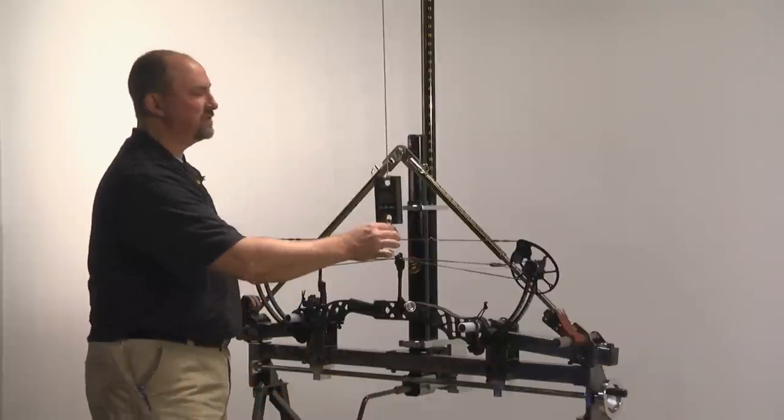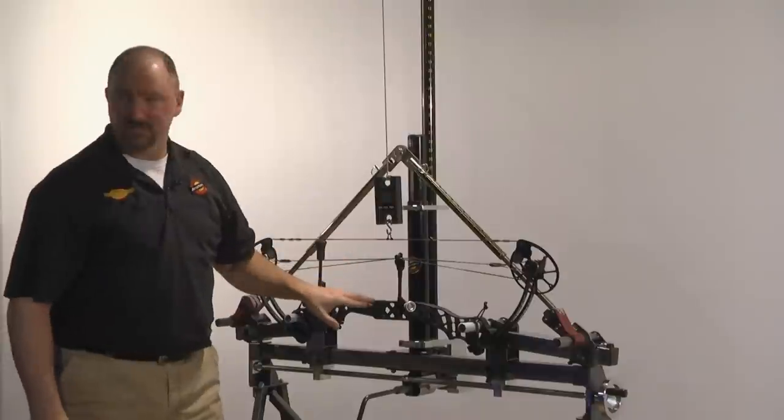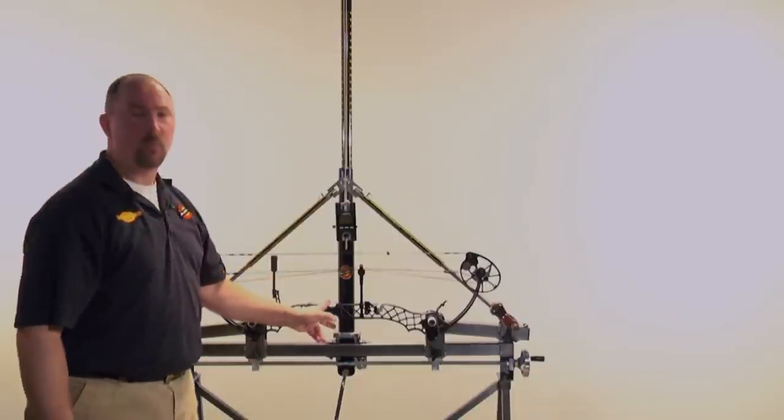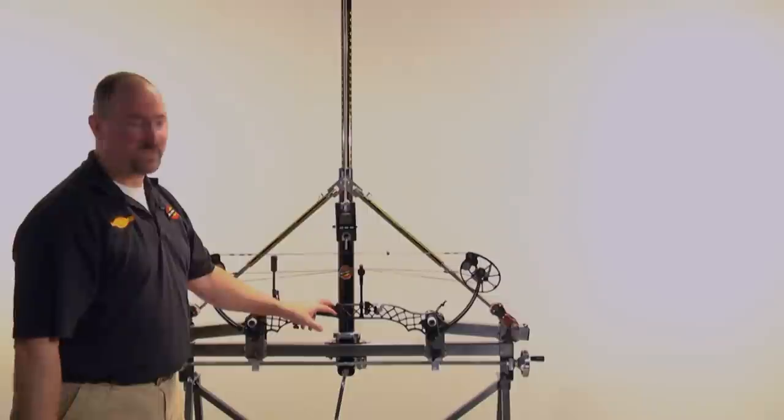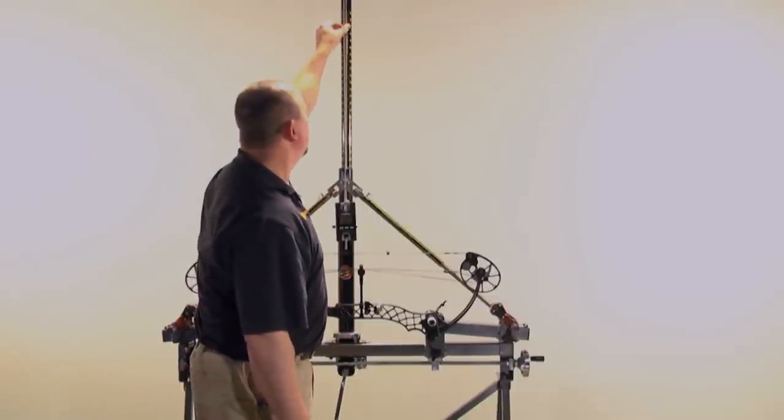And what we do once that's set at zero to determine a starting point for our o-ring is this bow has a seven inch brace height. ATA standards are the brace height plus 1.75 inches to determine draw length. This is seven, 1.75. We know we need to set the o-ring up here on 8.75 inches.